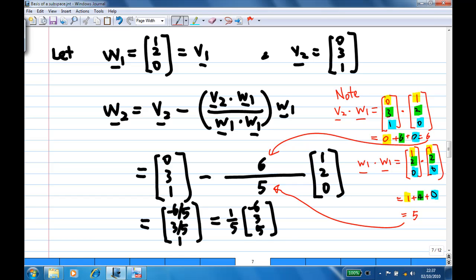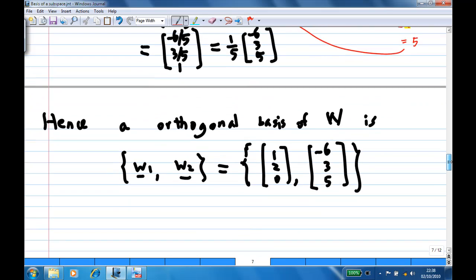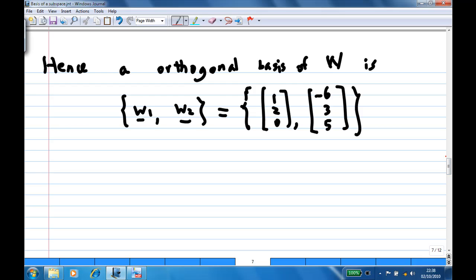So after the subtraction of these two vectors, I get minus 6 over 5, 3 over 5, and 1. Pull out a factor of 1 over 5, I get minus 6, 3, 5. So I have two vectors, w1 and w2 now. This set of vectors will be orthogonal, and so form an orthogonal basis. You can check easily that the dot product between them is 0.